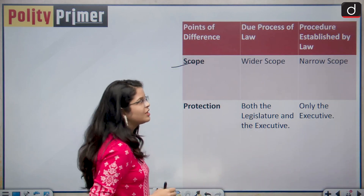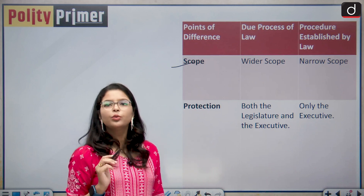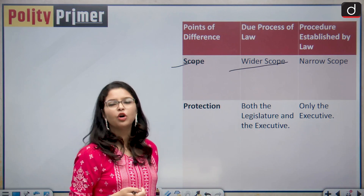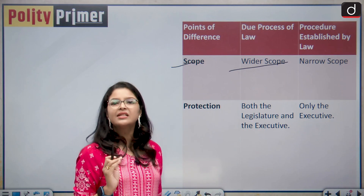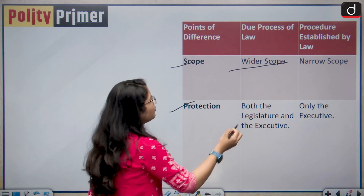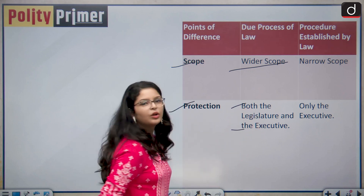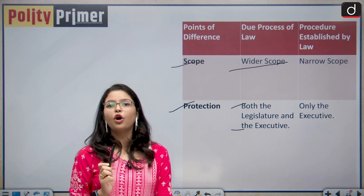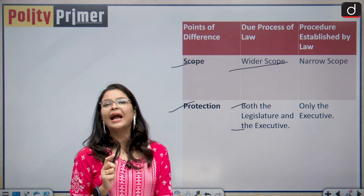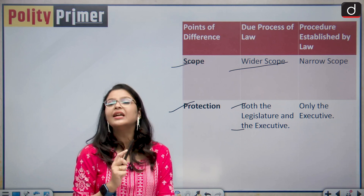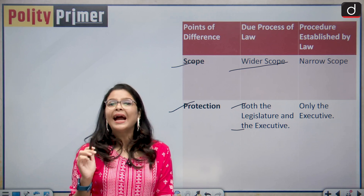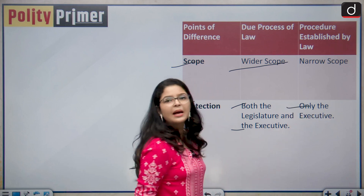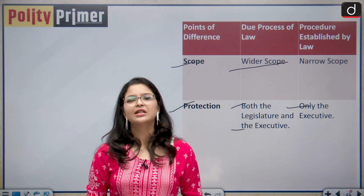Regarding scope: due process of law has a much wider scope than procedure established by law, which is narrower. Regarding protection: in due process of law, the court can examine the intention of both the legislature and the executive behind enacting and enforcing a law. But in procedure established by law, only the intention of the executive is seen.